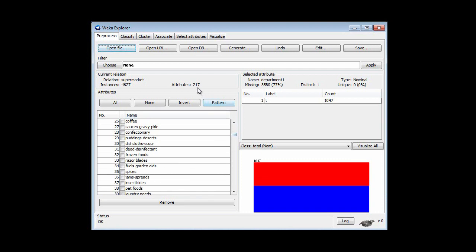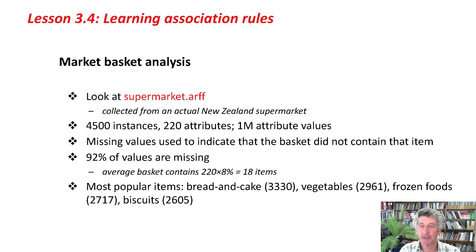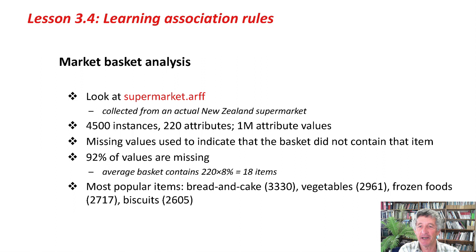There are 217 attributes and 4,600 instances in this data set — that's roughly a million attribute values. Missing values are used to indicate that the basket did not contain that item; in fact, 92% of the values are missing. That means the average basket contains 220 attributes times 8%, which is only about 18 items. The most popular items are bread and cake, vegetables, frozen foods, and biscuits.